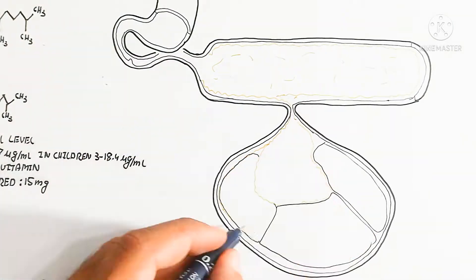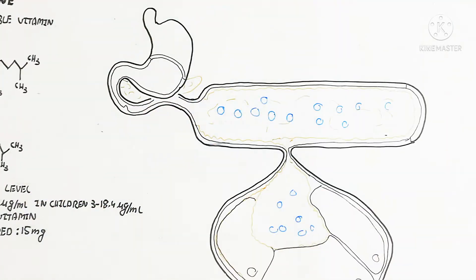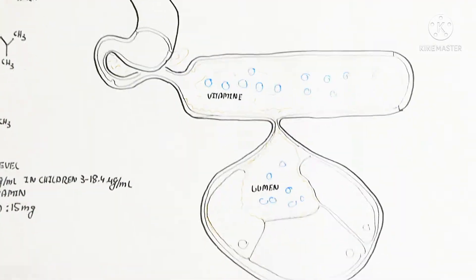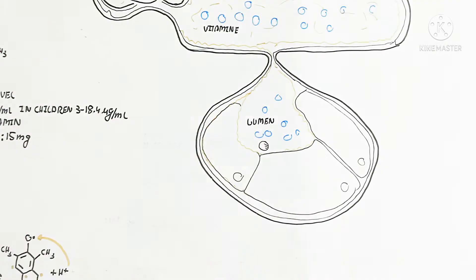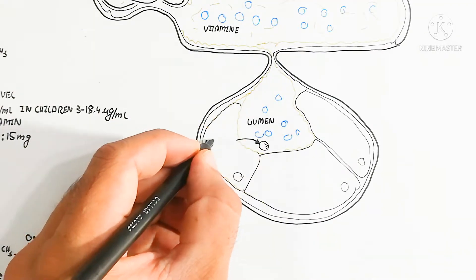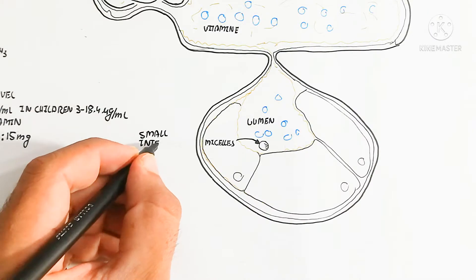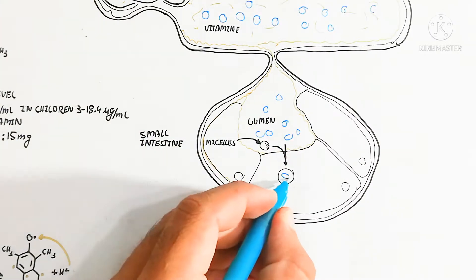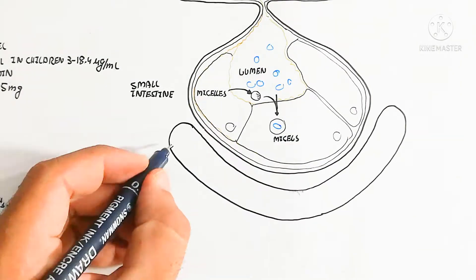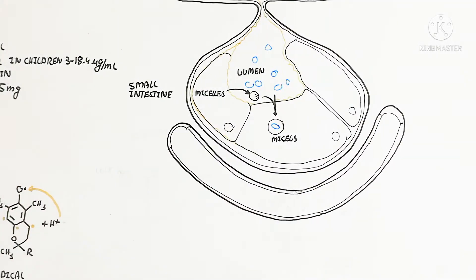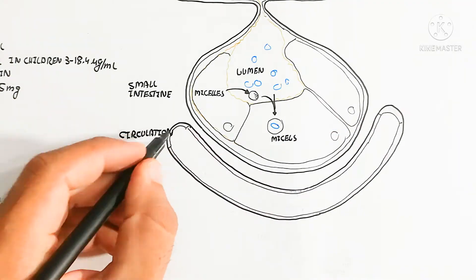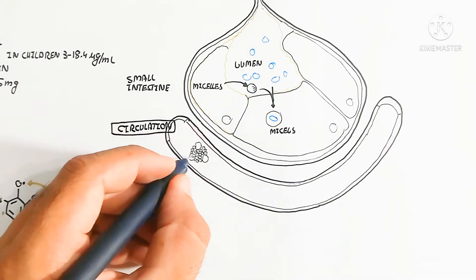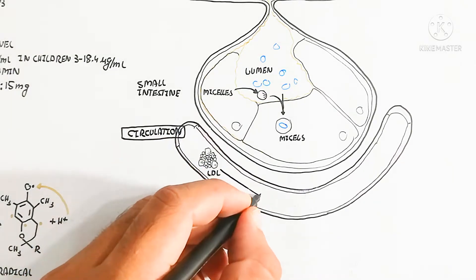In the duodenum, vitamin E is present in the lumen. It enters into micelles, which contain vitamin E within the lipid structure. These micelles are known as chylomicrons when they enter the blood. They first go into the lymphatic system and then into the circulatory system.